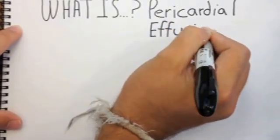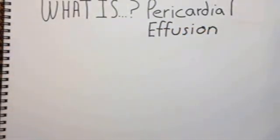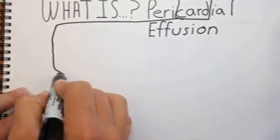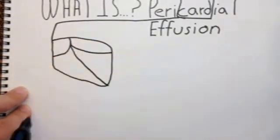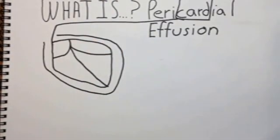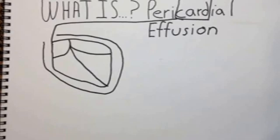Before we dive into the topic, let's take a second and break the word down so we can get a sense of what we're talking about. This is just good practice to know the roots when you have a lot of confusing medical terminology — it will give you a clue as to what you're looking into. The first root we're interested in is 'card,' which should tell you we're talking about some aspect of the heart, like cardiac. The other root is 'peri,' which we know from words like perimeter and just means 'around.'